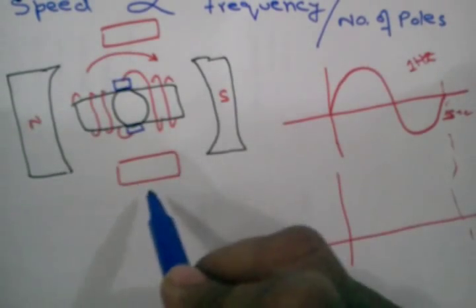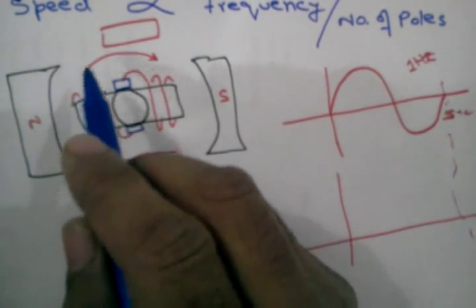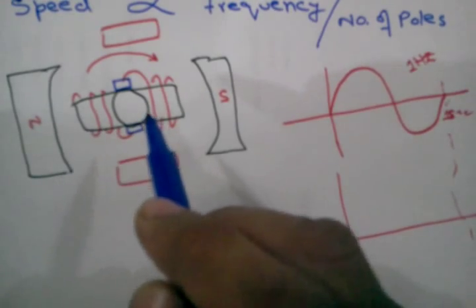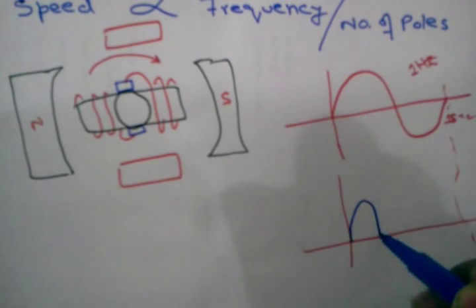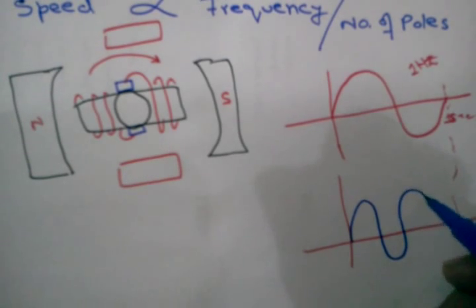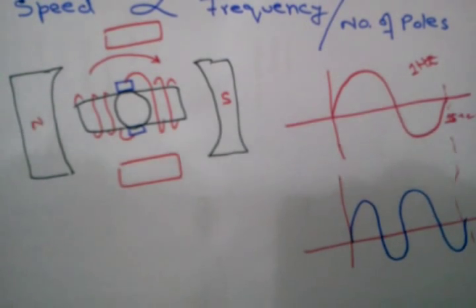If there are four number of poles—pole number one, pole number two, pole number three, and pole number four—so for one complete rotation, the motor shifts its pole four times. Therefore, its frequency will be doubled.